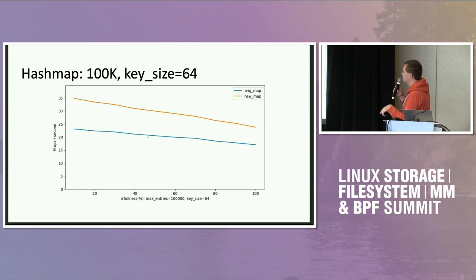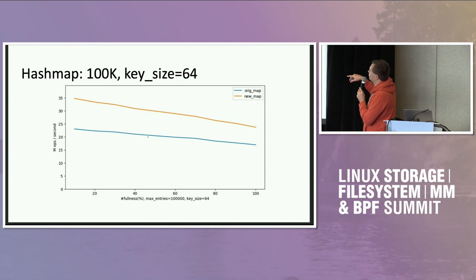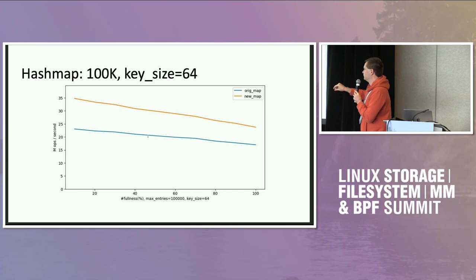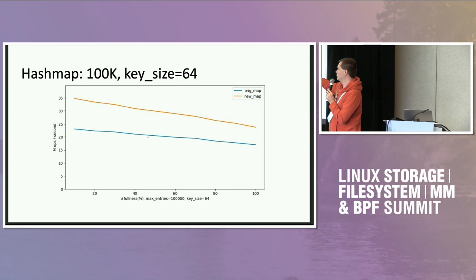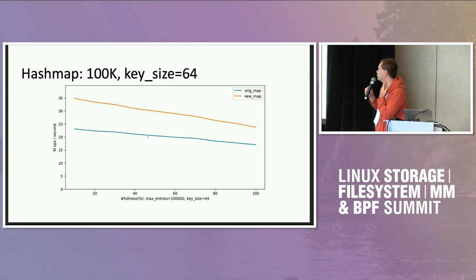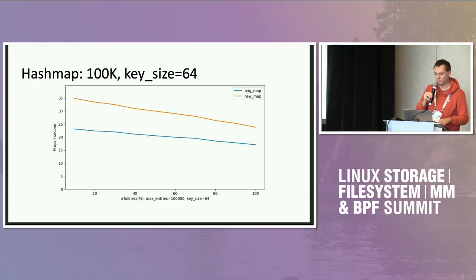This is another slice: a hash map of 100,000 keys with key size 64. On the left it's empty, on the right it's full. You can see that for a 20–40% full map, the xxh3-based hash map works about 40–45% faster than the jhash-based map. So for bigger keys, it definitely makes sense to use a new hash function.